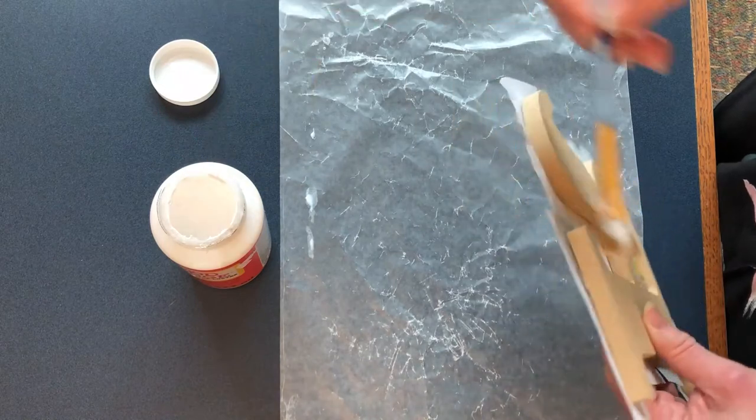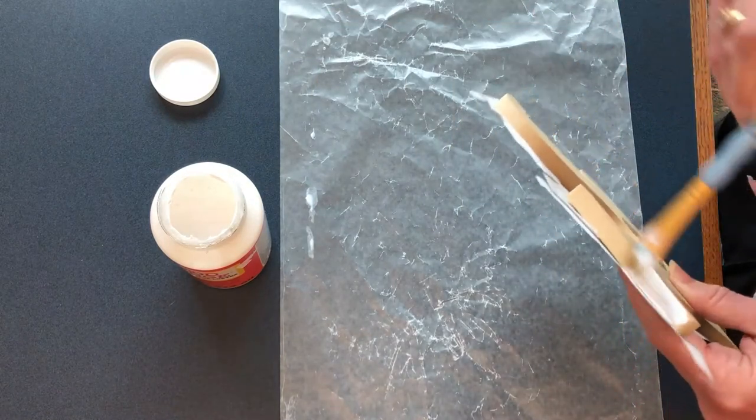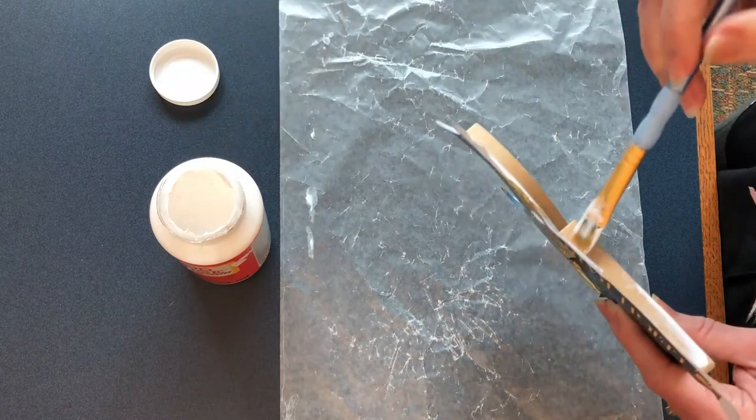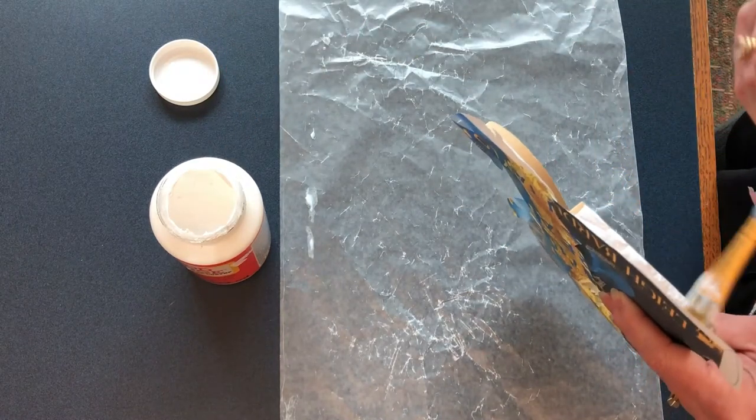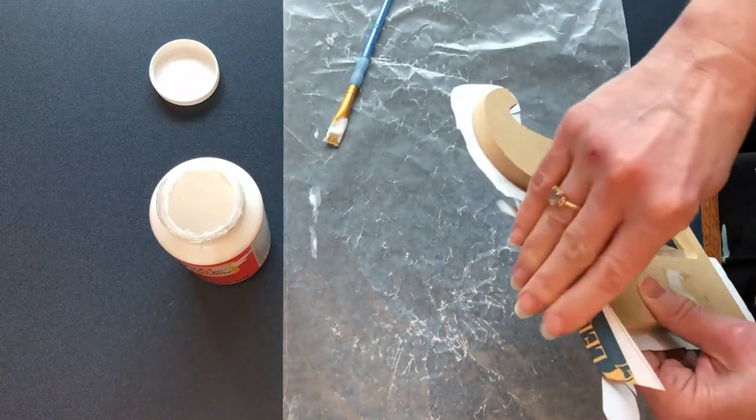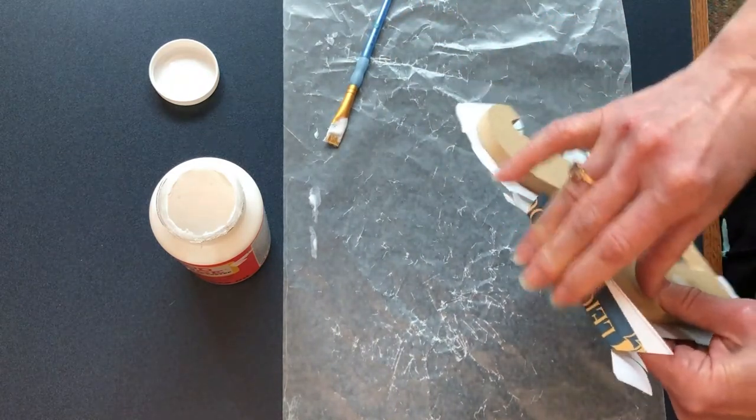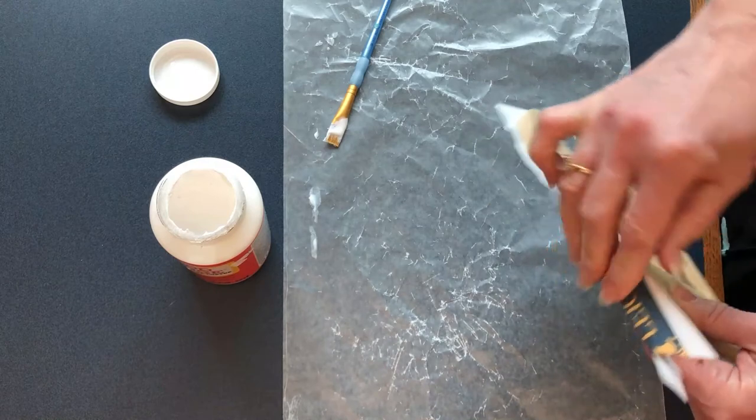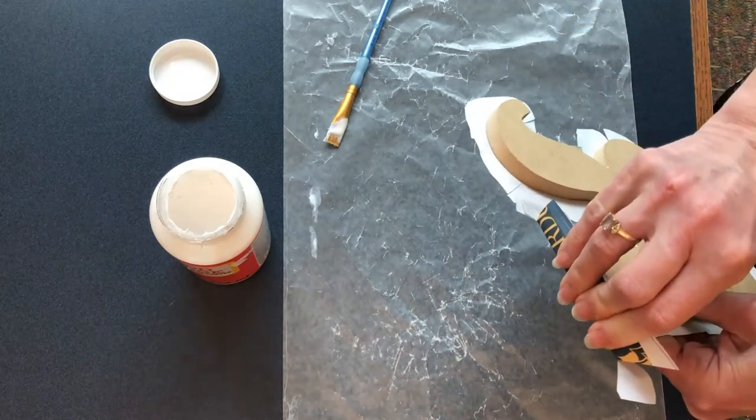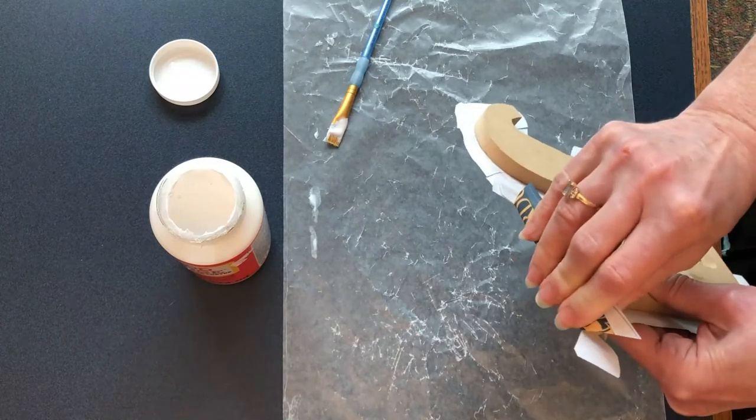So you just get some glue, put it on the edge because we're going to fold the edges over. We're just going to lay it like that and press it hard so it stays. You may have to hold it a little bit. And then do that for all of the edges.